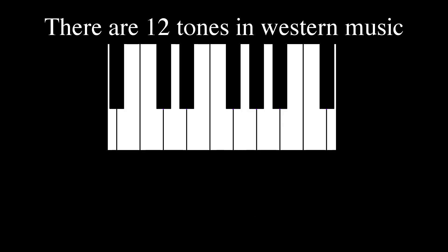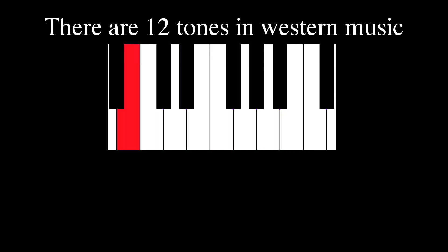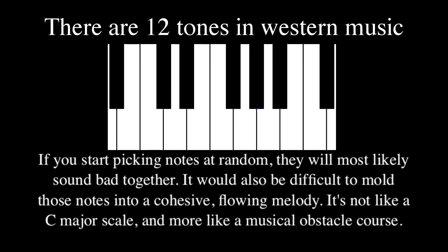There are 12 tones in the Western music system. If you start picking notes at random, they will most likely sound bad together. It will also be difficult to mold those notes into a cohesive, flowing melody. It's not like a C major scale — it's more like a musical obstacle course.